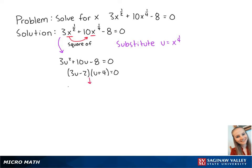Now we have the equations 3u minus 2 equals 0 or u plus 4 equals 0. For the first equation, we get u equals two-thirds, and for the second equation, we get u equals negative 4.